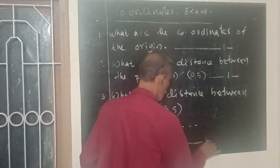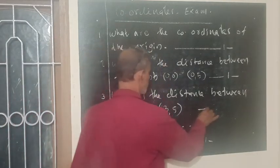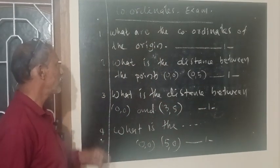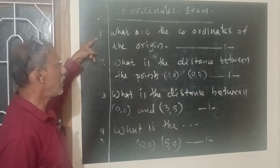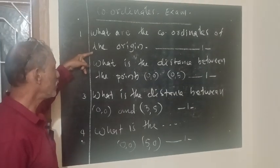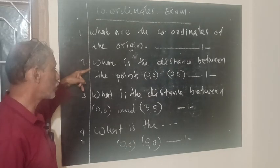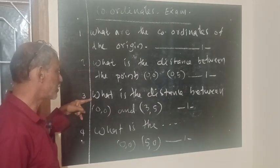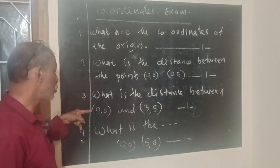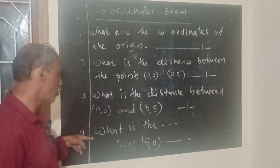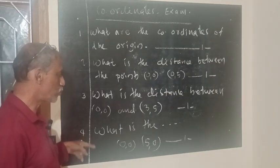What is the distance between the points (0, 0) — that means the origin — and (0, 5)? What is the distance between (0, 0) — that means the origin — and (3, 5)? What is the distance between the points (0, 0) and (5, 0)?